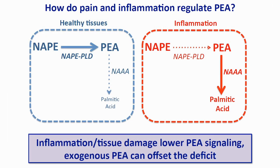Here is how we think it works. In healthy tissues there is a lot of PEA. The enzyme that makes PEA is called NAPE-PLD, which cuts a large lipid on our cells called NAPE. PEA can then be deactivated by another enzyme called NAAA into palmitic acid. In inflammation and painful states, PEA is much less. Why? Because the enzyme that makes it, NAPE-PLD, is down-regulated — its transcription goes down. And the enzyme that destroys PEA, producing palmitic acid, is increased. It's a double whammy: less production, more degradation, less PEA.